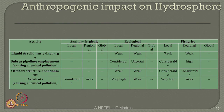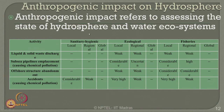Looking at the anthropogenic impact on hydrosphere caused by various oil and gas sector activities, anthropogenic impact refers to assessing the state of hydrosphere and water ecosystems. The various activities include liquid and solid waste discharge from the oil sector into the sea, subsea pipeline emplacement resulting in chemical pollution, and offshore structure abandonment — many platforms installed in shallow and medium water depths, now processing platforms, need to be abandoned, which can also cause serious anthropogenic impact on hydrosphere.